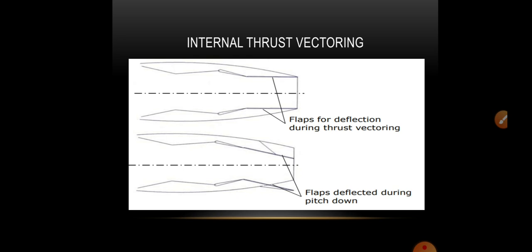Here we have control surfaces inside the nozzle that we can actuate during thrust vectoring. Flaps for deflection can be provided so that we can actuate these control surfaces either downwards or in the upward direction, allowing us to control the thrust vector.